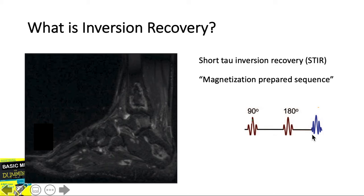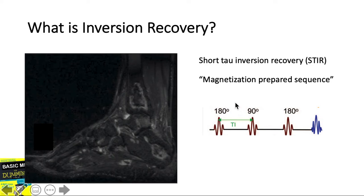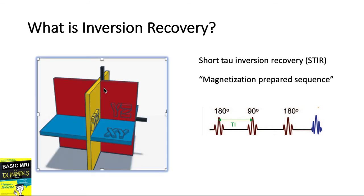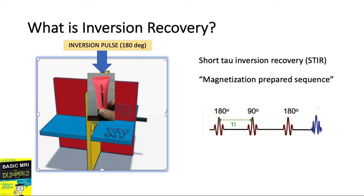The STIR pulse sequence looks much like a spin echo: we have a 90-degree excitatory pulse, then a 180-degree refocusing pulse, followed by the echo. But since this is a magnetization-prepared sequence, it has a twist — an additional 180-degree inversion pulse. Our goal is to ensure that fat will not contribute to the signal.